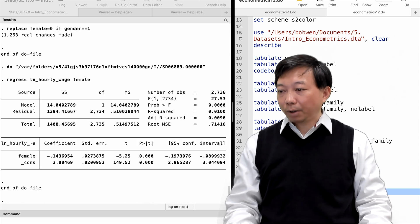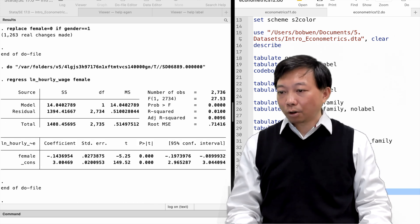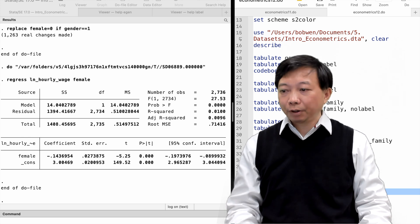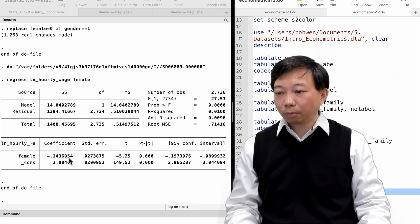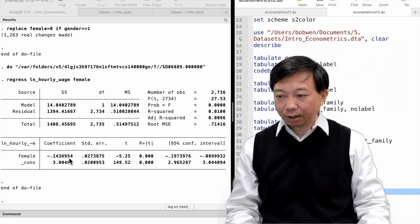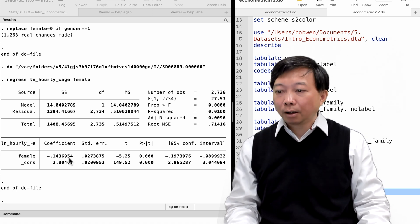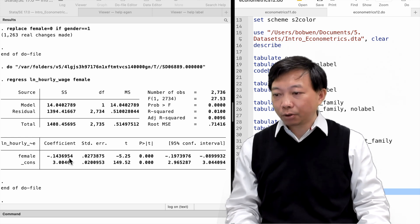When we regress the log hourly wage on the binary variable female, we find that the estimated coefficient is minus 0.14, implying that female workers earn 14% less than male workers on average.